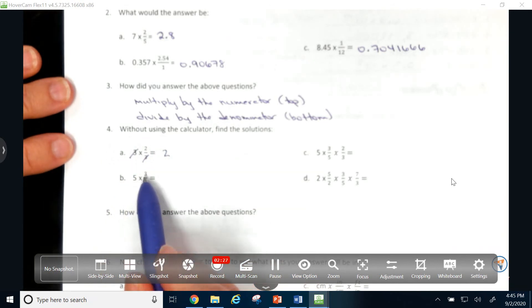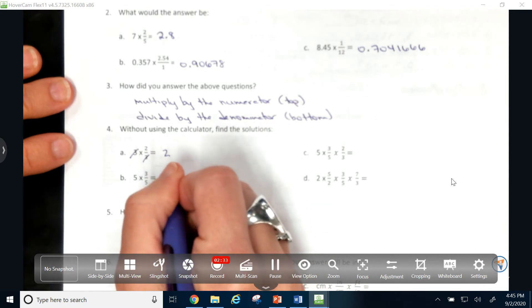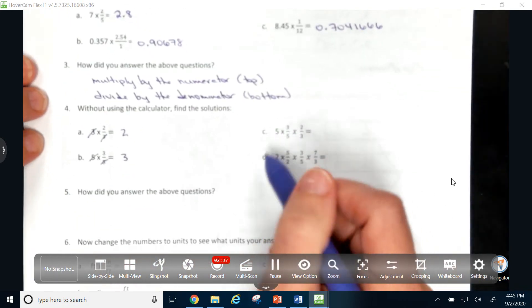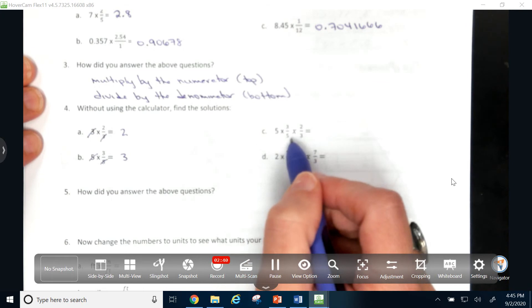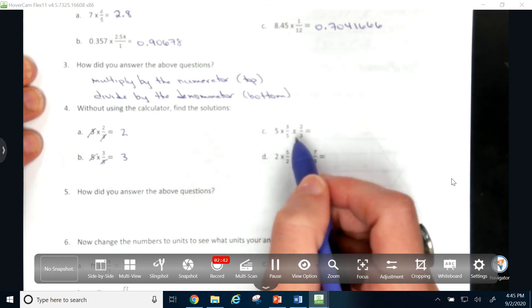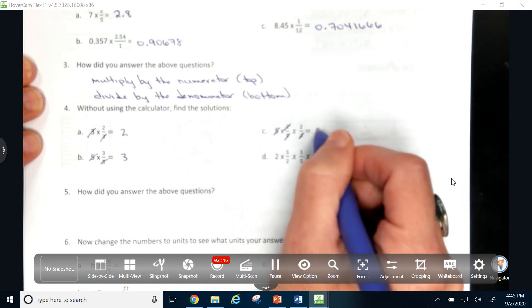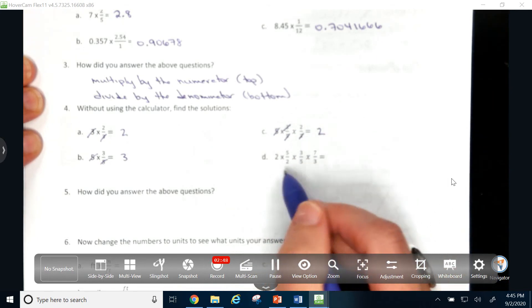If I have 5 times 3 fifths, and I know that's going to be 5 times 3 divided by 5, I know that my answer is going to be 3 because the 5s will cancel out. Conversely with C, we're getting a little longer here. 5 times 3 fifths divided by 2 thirds, I know that the 5s will cancel, the 3s will cancel, and my answer is 2.